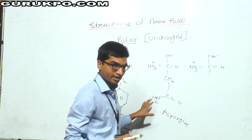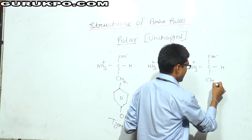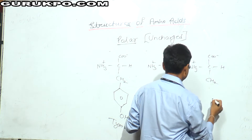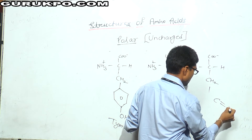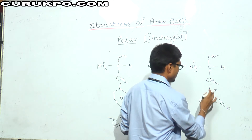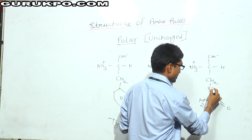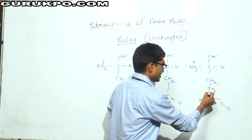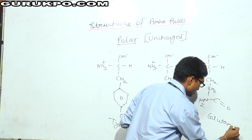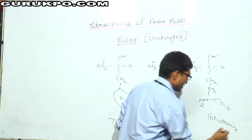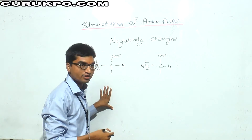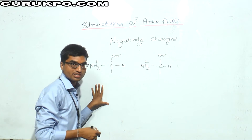Again from alanine, if I replace one H with a CO-NH2 group and also place a CH2 group in between, I will get glutamine. So I have formed all types of polar and uncharged amino acids from alanine.